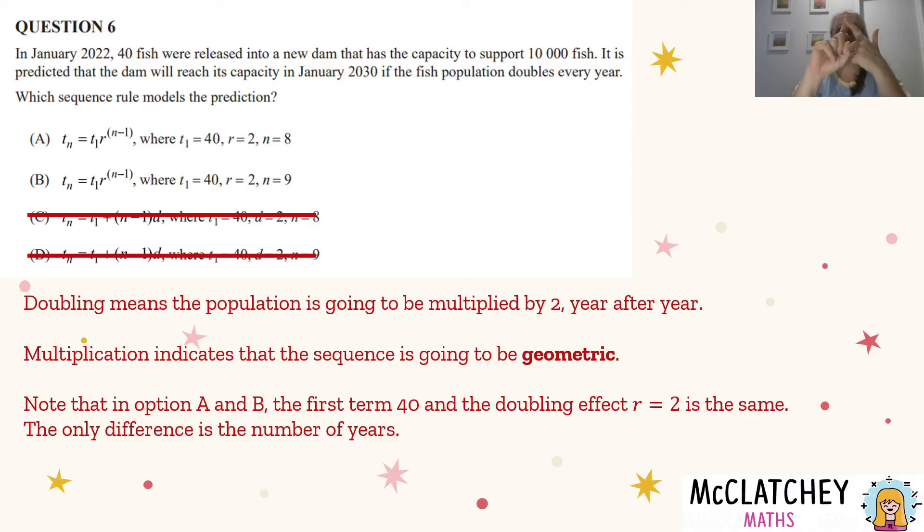2022, 23, 24, 25, 26, 27, 28, 29, 30 is actually nine years. So that is actually going to be our answer for this one. So be very careful with anything that involves years. Don't just do take away because you've got to include the first year and the last year.